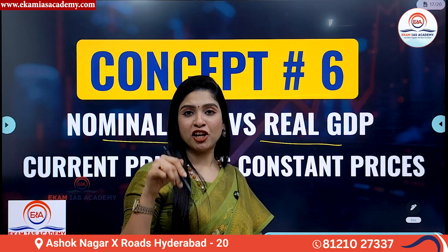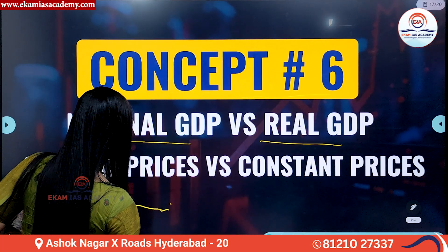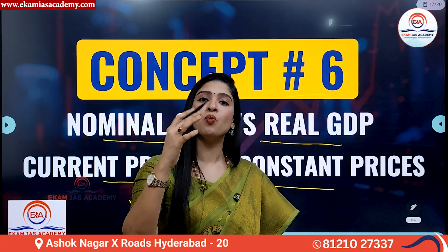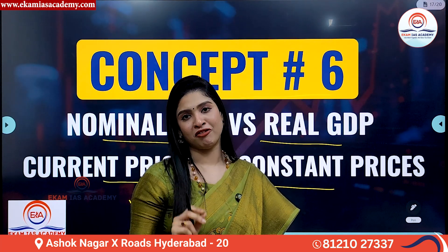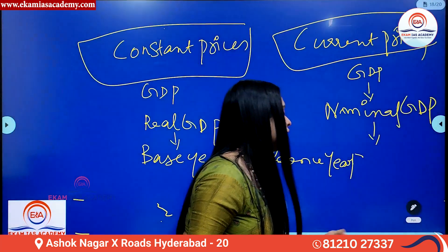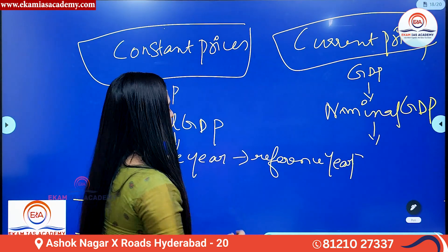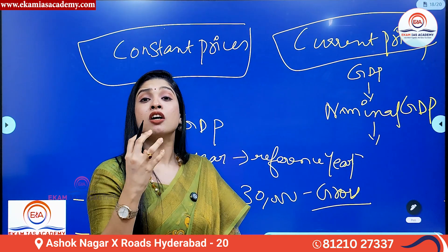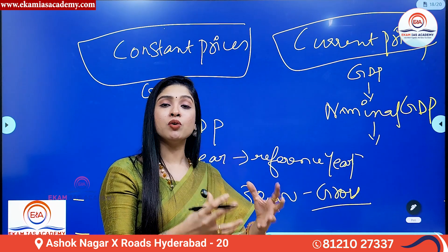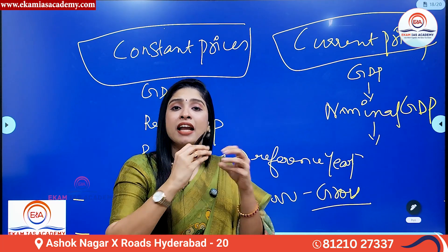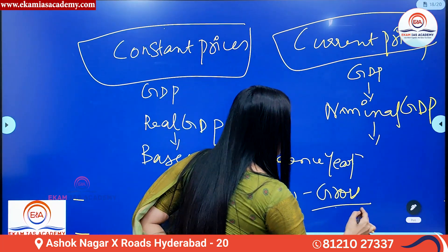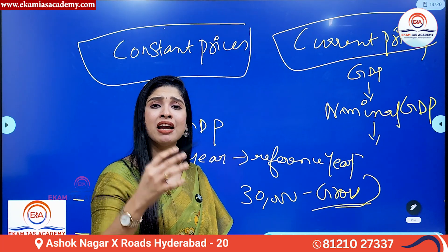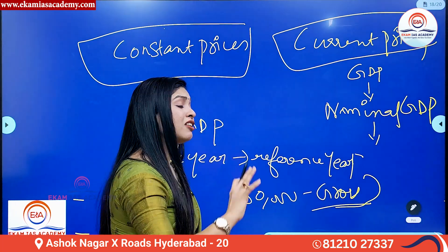Before telling you the meaning of that, I should tell you what current prices and constant prices are — that will make you understand real versus nominal GDP in a most simplified manner. For example, your total salary is 30,000. That is called the gross value. The total value without any reduction is called gross value. In this gross value, when I include something — it could be taxes, it could be inflation, it could be depreciation — the value changes.